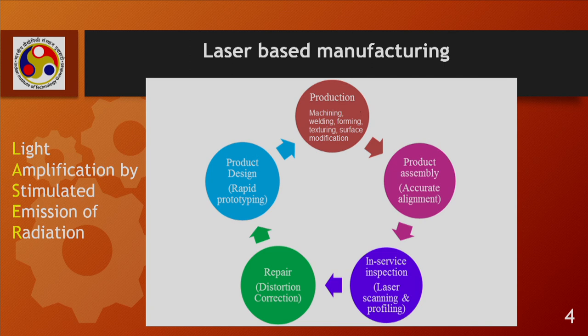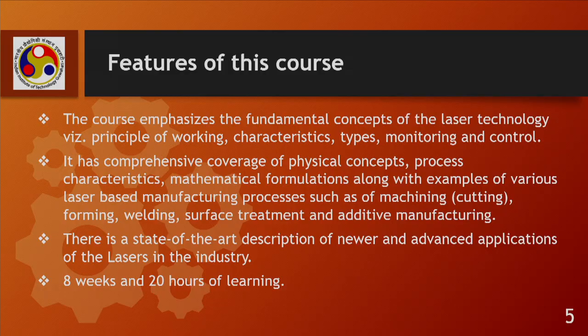In assembly of products, lasers are utilized to have accurate and proper alignment of various parts and subsystems. For inspection and quality control, lasers are used in the industry by applying laser scanning and profiling techniques. Lasers are also used as a repair tool to correct distortions in developed parts or workpieces.